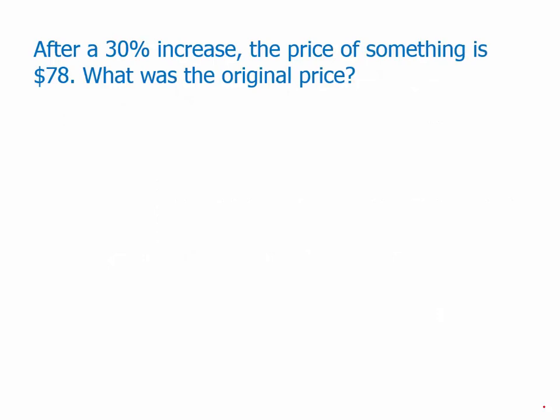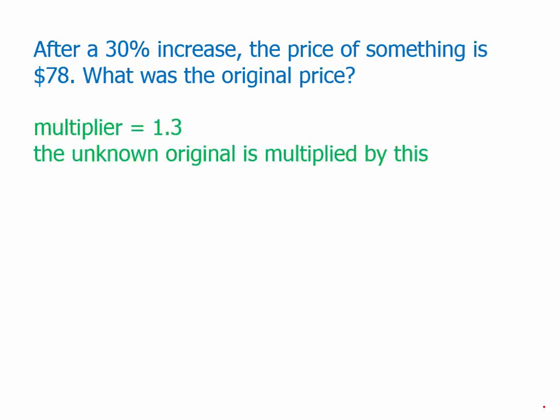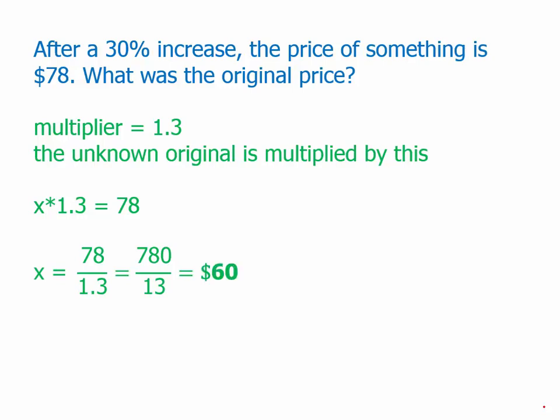Here's a practice problem. After a 30 percent increase, the price of something is $78. What was the original price? To find the multiplier for 30 percent, change it to a decimal — 0.3 — and add 1, giving 1.3. The unknown original multiplied by 1.3 equals 78. Call the original x: x times 1.3 equals 78, so x equals 78 divided by 1.3. Multiplying numerator and denominator by 10 gives 780 divided by 13, which is 60. So the original price was $60. If we increase 60 by 30 percent, we get 78.